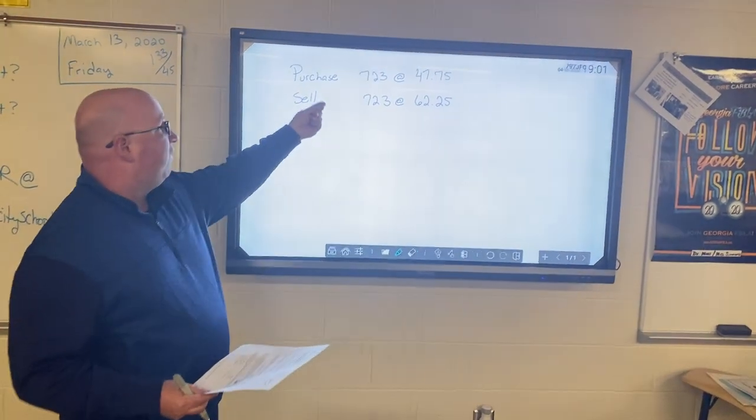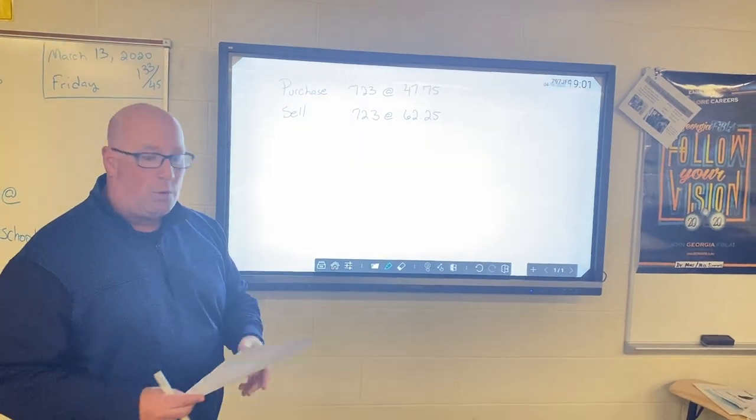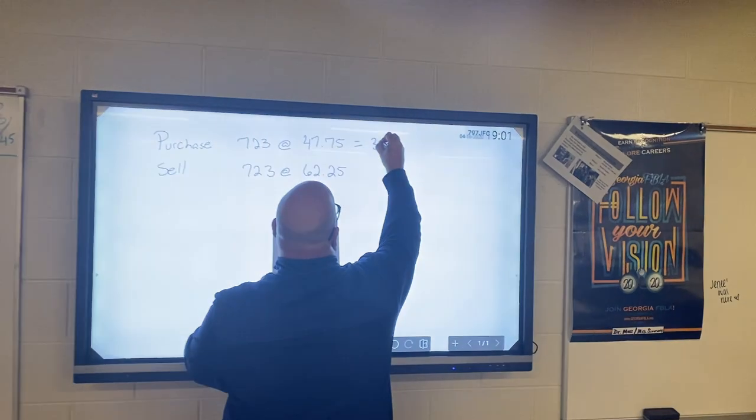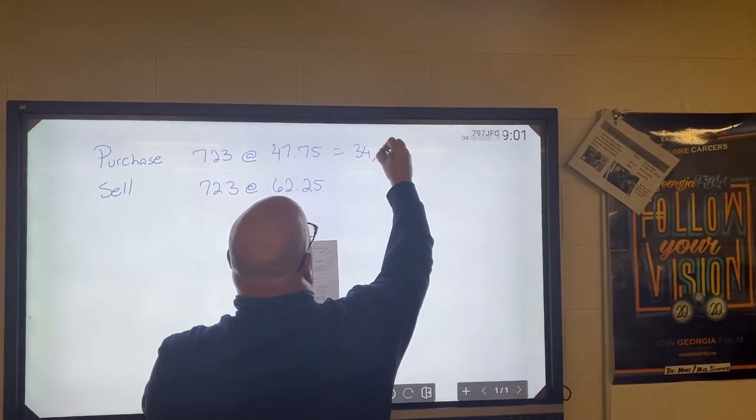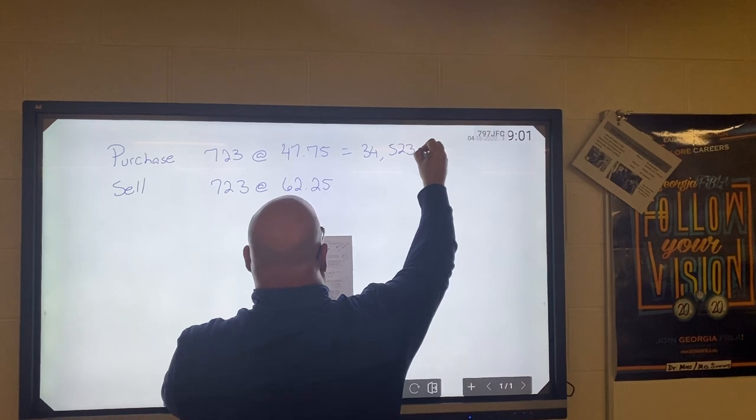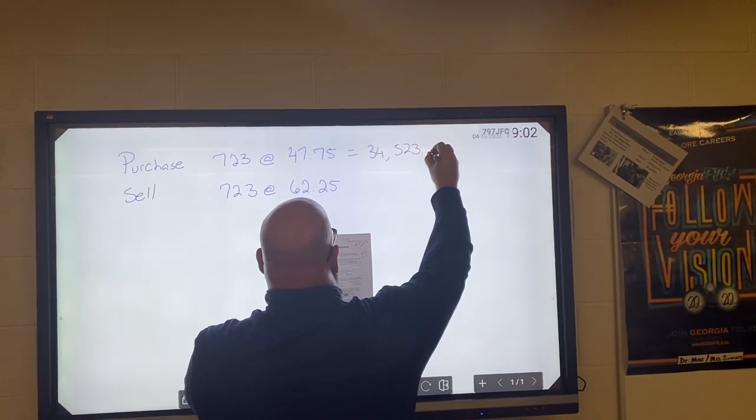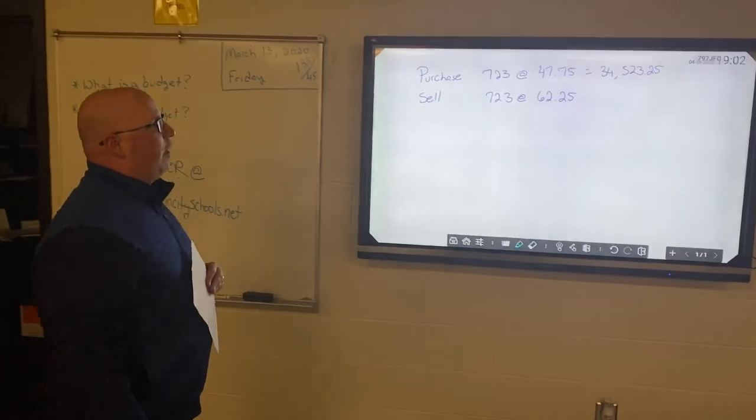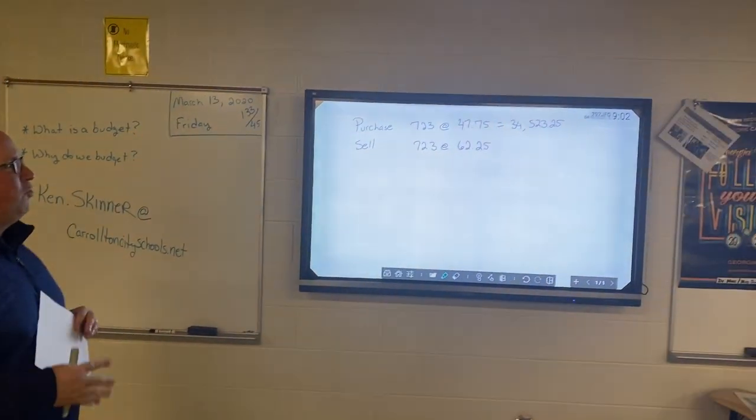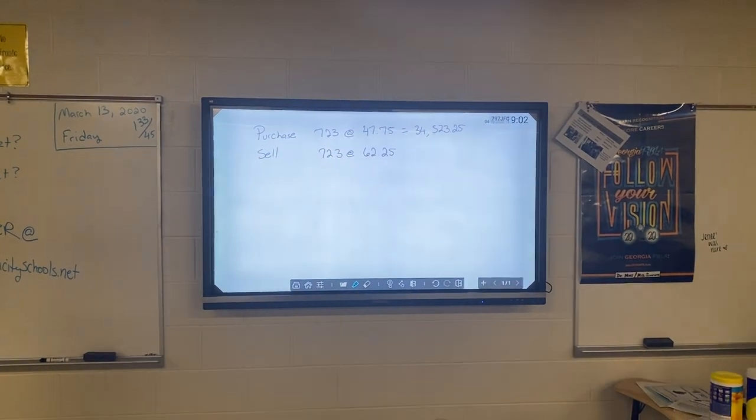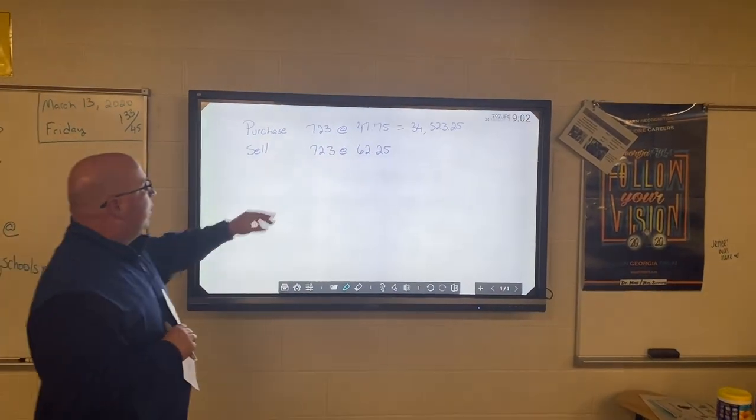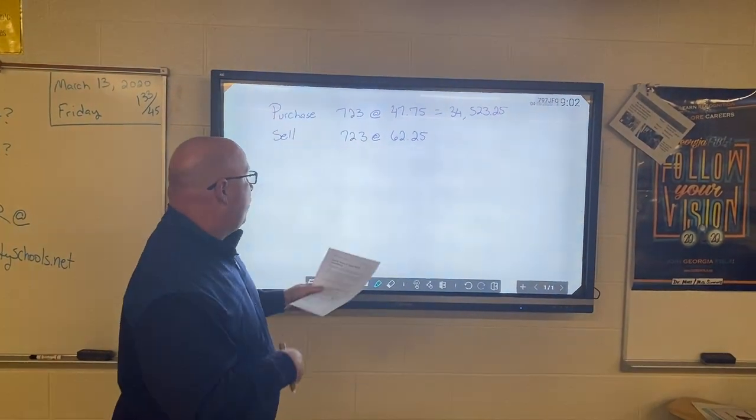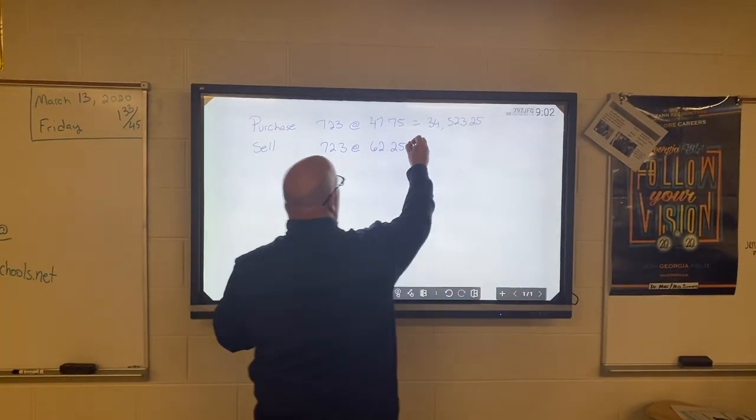The math is very simple. If you want to see the total amount that you're spending, you simply take 723 multiply times $47.75. When you do that, you're going to get $34,523.25. So that's how much money you spend on the front end.